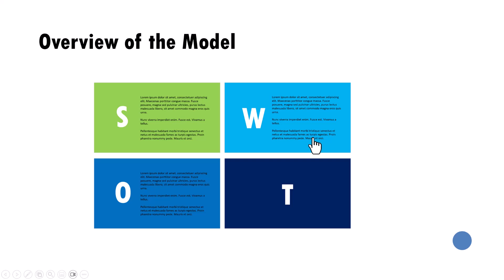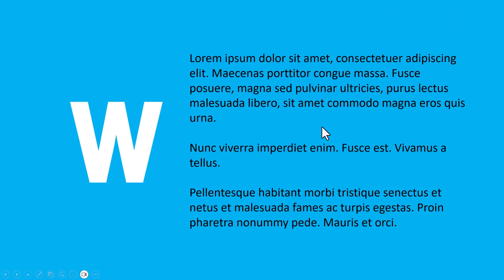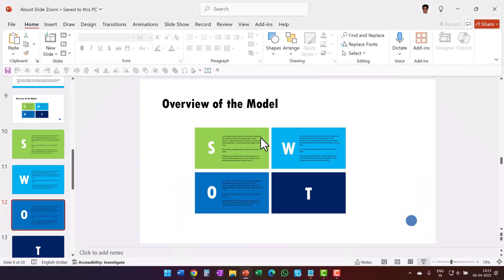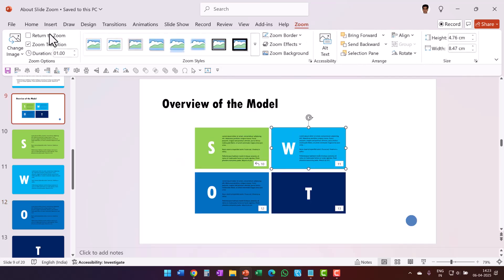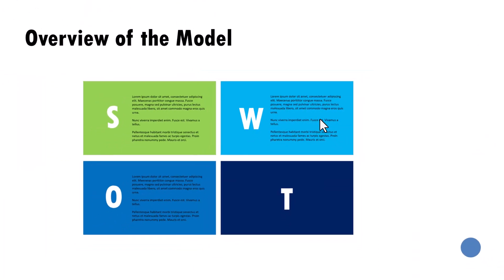Return to Zoom only works for slides where that option has been enabled. For example, clicking on W and hitting Enter goes to the next slide — not back to the orientation — because Return to Zoom was not set for that slide. If I select W, go to Zoom and click Return to Zoom — note that Zoom is a contextual tab that only appears when you click on a zoomed slide — then in slideshow mode hitting Enter will return me to the orientation slide.